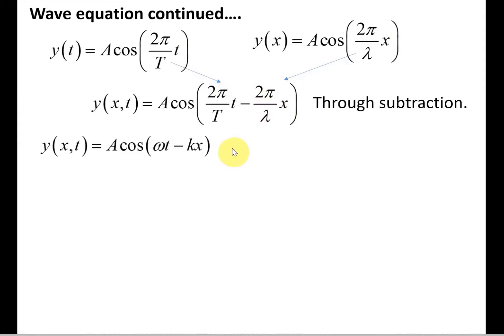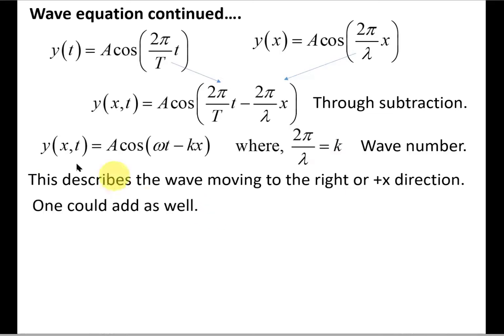That can be written in a slightly compact form by replacing 2π over T with omega and 2π over lambda by k. k has a special name, we call it the wave number. This equation containing the negative sign in the term containing x represents or describes the wave moving to the positive x direction, or we can say to the right.